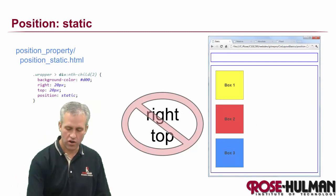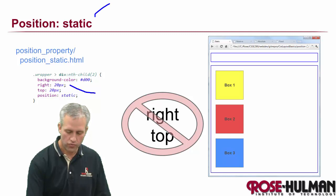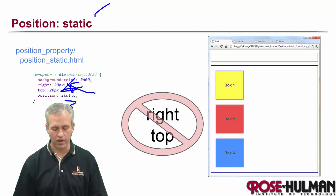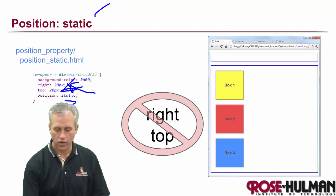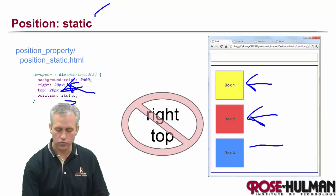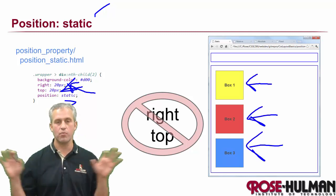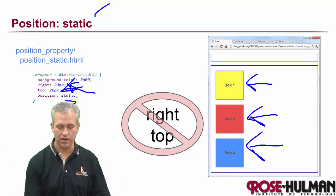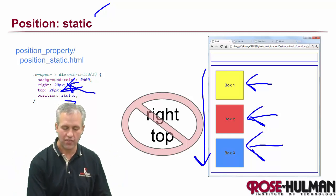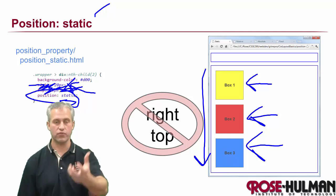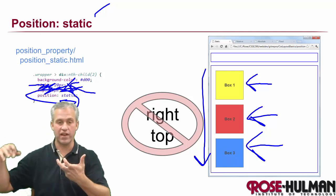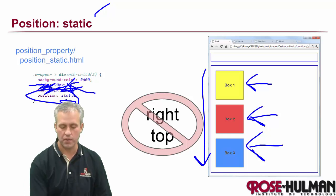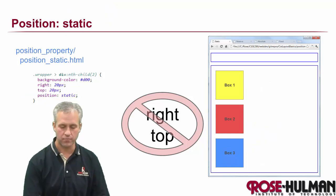In the static example, all three boxes have rules set for right and top, but they're not moved around at all. That's because static is the default, and those offset rules are ignored. So nothing changes — this is the baseline behavior exactly as you'd expect.